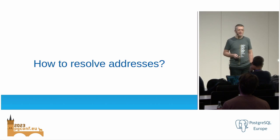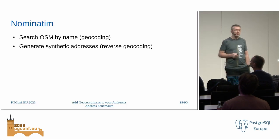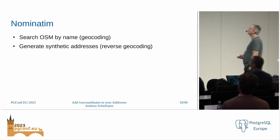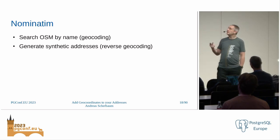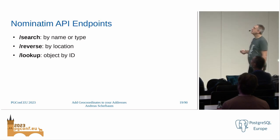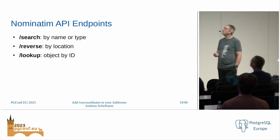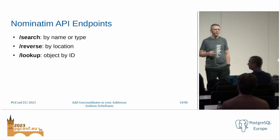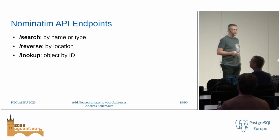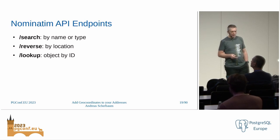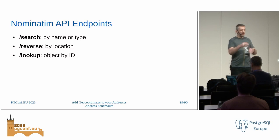How can we use all of this to get coordinates from our addresses? There's a service for OpenStreetMap called Nominatim — that's Latin for 'by name'. We can plug any address into Nominatim and see how well it can be resolved. It can also do the reverse: give it a latitude and longitude and it returns the nearest object in the database. For this we have three API endpoints: search, reverse, and lookup. Lookup lets you provide an OpenStreetMap object ID and get all the data for that specific object.